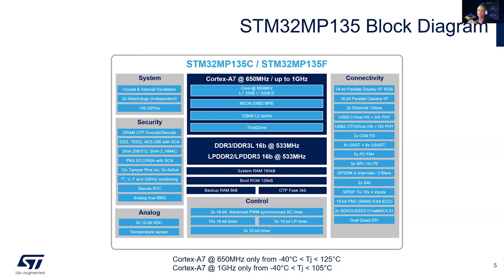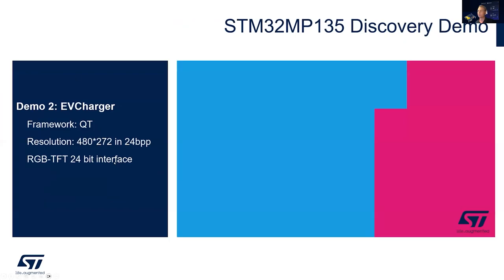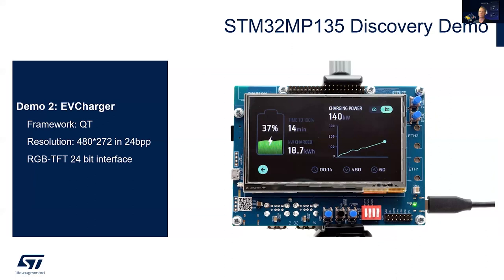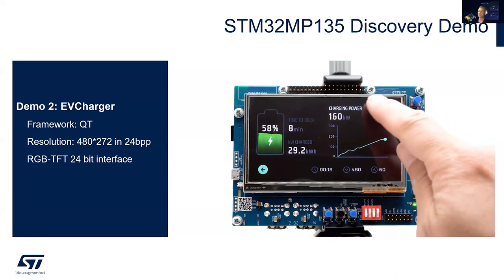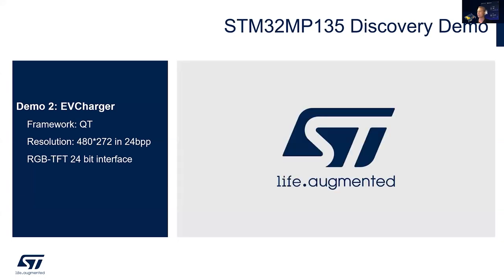Supported resolutions include 320x240, 480x272, and even up to 720p — but when you go up in resolution, the UI needs to be simpler. To summarize: you can do nice UIs on the MP135 with Qt. There is a board support package available for this device right now. You can run full-color GUIs by utilizing the DDR3 and the 1GHz CPU for UI rendering, taking up some CPU cycles. You can run the OpenSTLinux distribution beneath the Qt framework. To show the capabilities, we have the MP135DK discovery kit — 480x272 resolution, 24-bit pixel UI — running a Qt EV charger UI, which is quite nice.